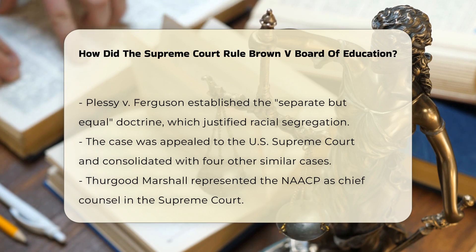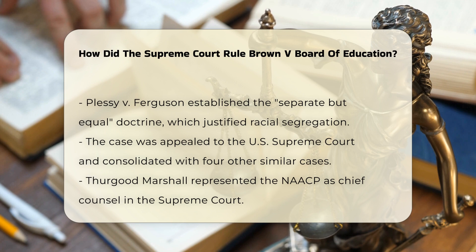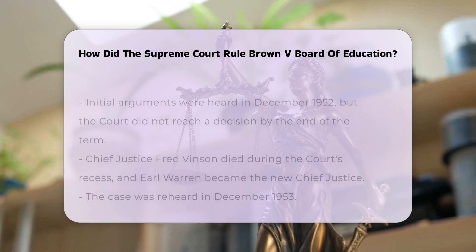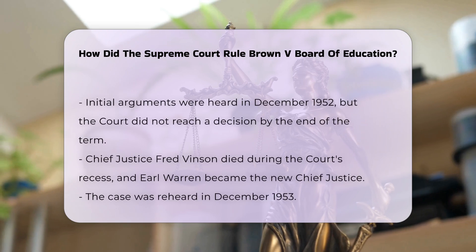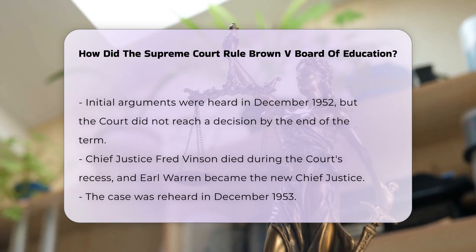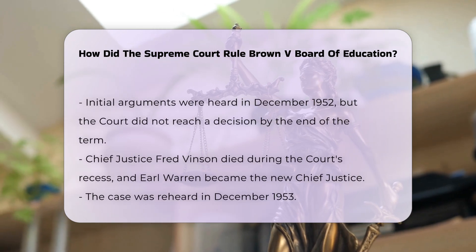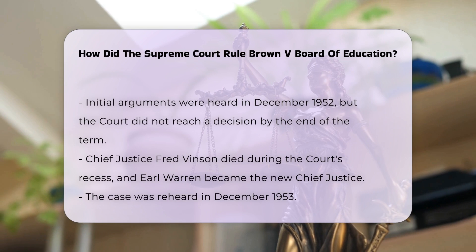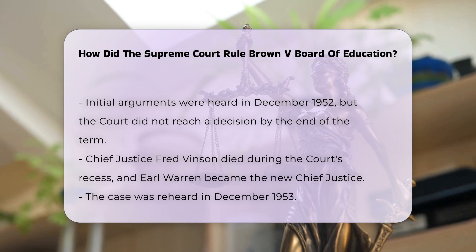Briggs v. Elliott, Davis v. Board of Education of Prince Edward County, Gebhardt v. Ethel, and Bolling v. Sharp. Thurgood Marshall, the chief counsel for the NAACP, argued the case before the Supreme Court.